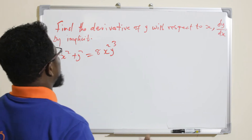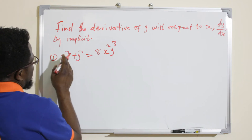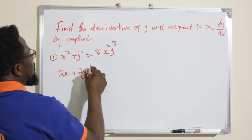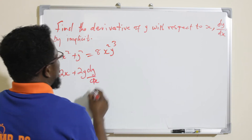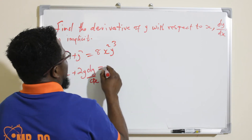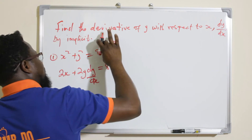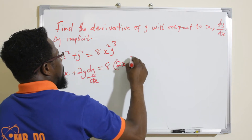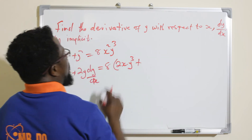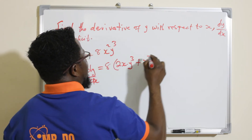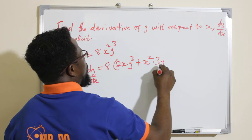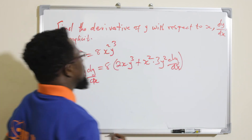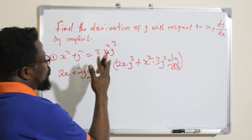Question one: x² + y² = 8x²y³. I differentiate term by term: the derivative of x² gives 2x, plus the derivative of y² gives 2y · dy/dx, equals — applying the product rule to 8x²y³ — keeping y³ constant differentiating 8x² gives 16xy³.